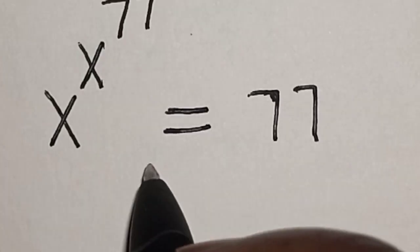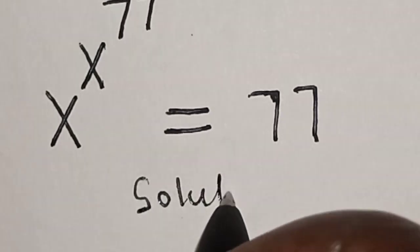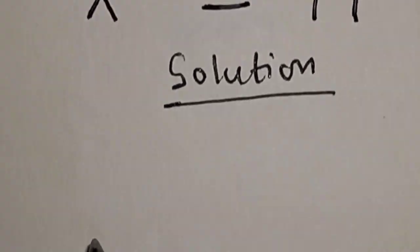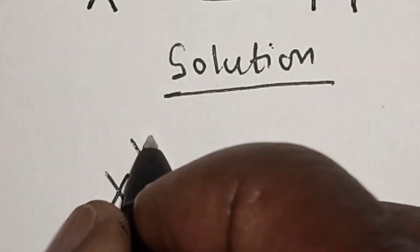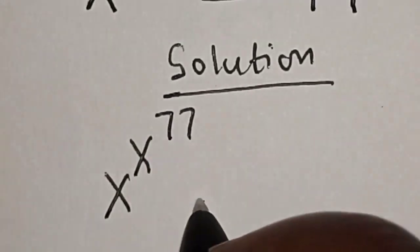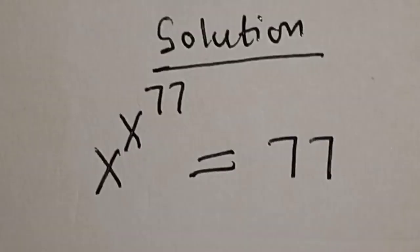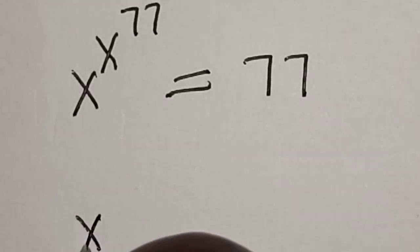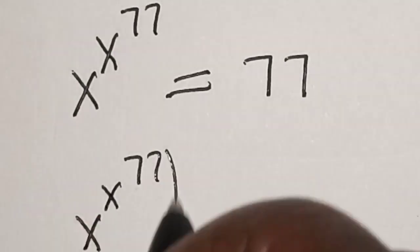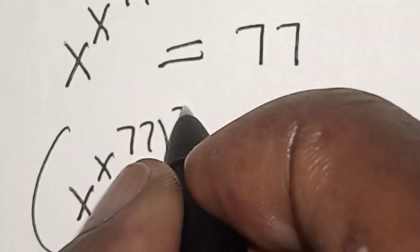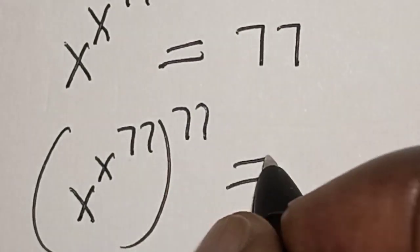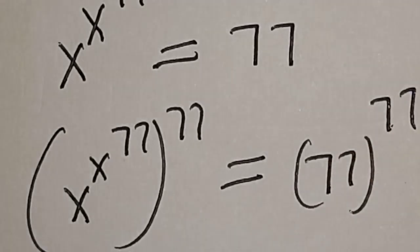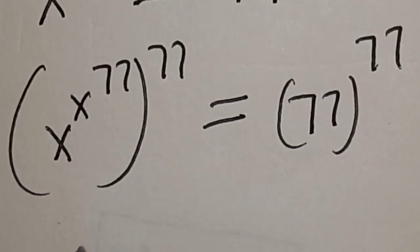Solution: we have the given equation x raised to power x raised to power 77 is equal to 77. Let's multiply the power of both sides by 77, that is x raised to power x raised to power 77, all raised to power 77, is equal to 77 multiplied by 77.